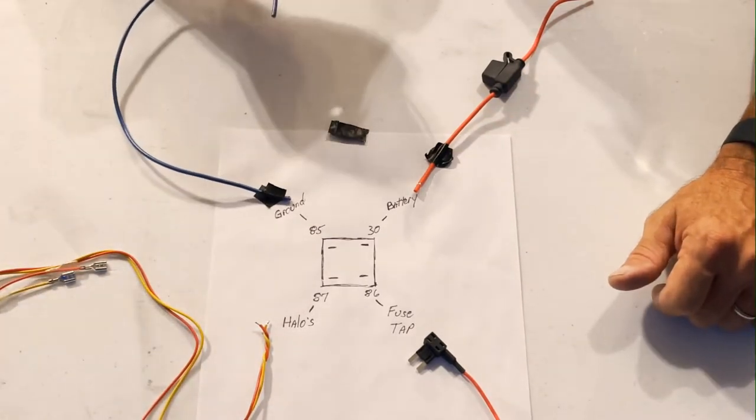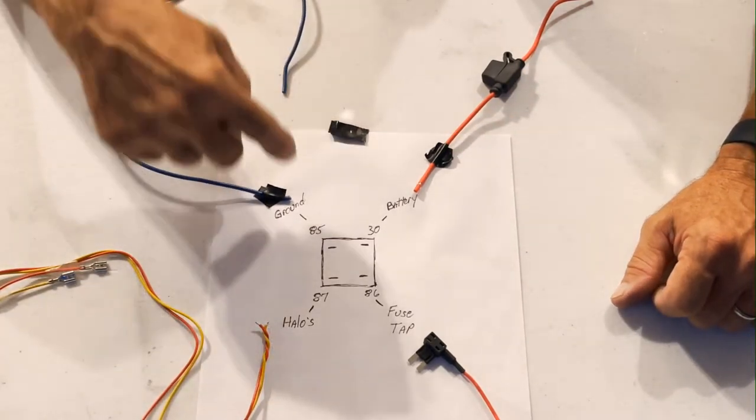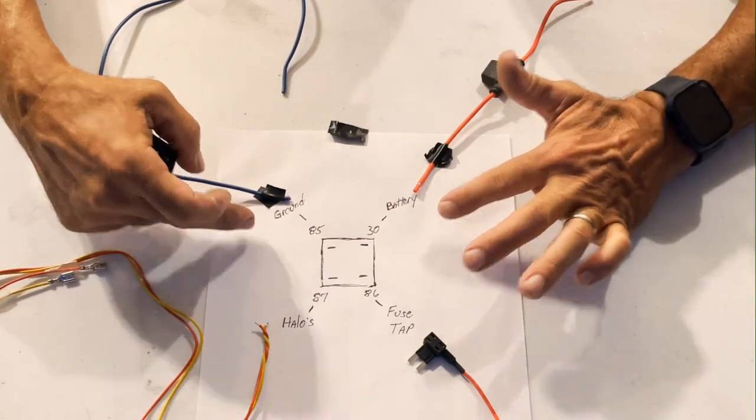You go from the battery or the ground anywhere chassis ground to pin 85. That's your positive and negative.